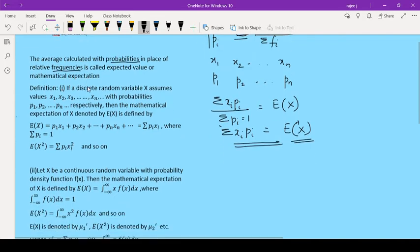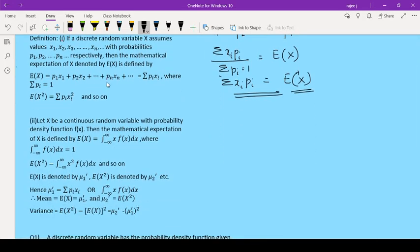Okay. Now, expectation of x is pi into xi. Now, if I want to write expectation of x square, expectation of x square will be summation of xi square into pi.